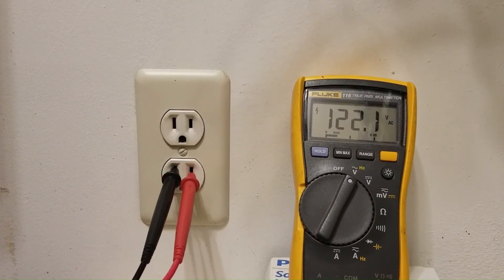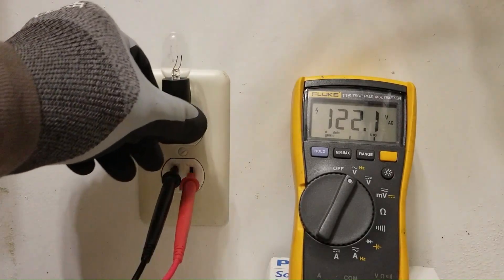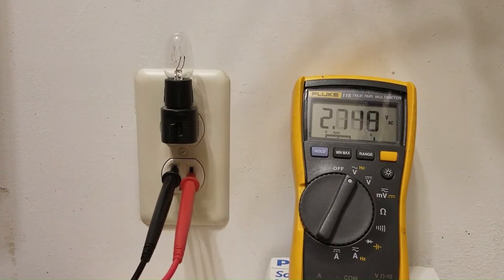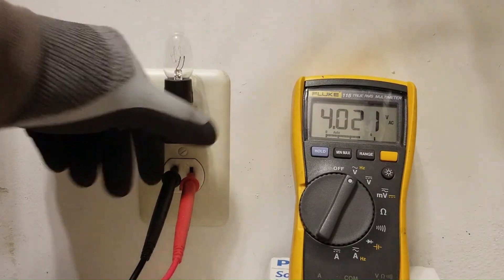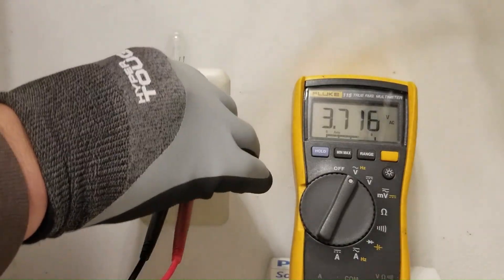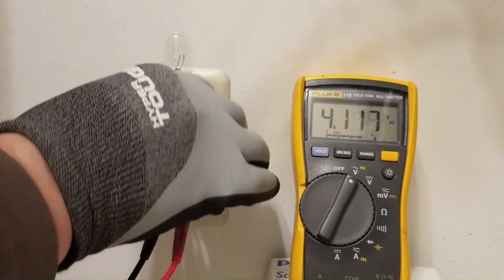But when I plug this light in, it drops down to just a couple of volts. So this is the compromised voltage source. And the issue is being manifested under load.